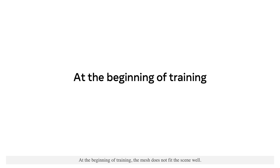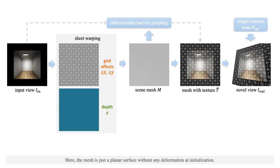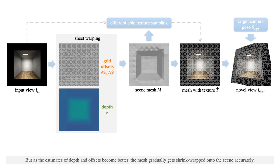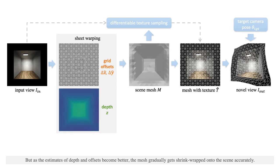At the beginning of training, the mesh does not fit the scene well — it is just a planar surface without any deformation at initialization. But as the estimates of depths and offsets become better, the mesh gradually gets shrink-wrapped onto the scene accurately.